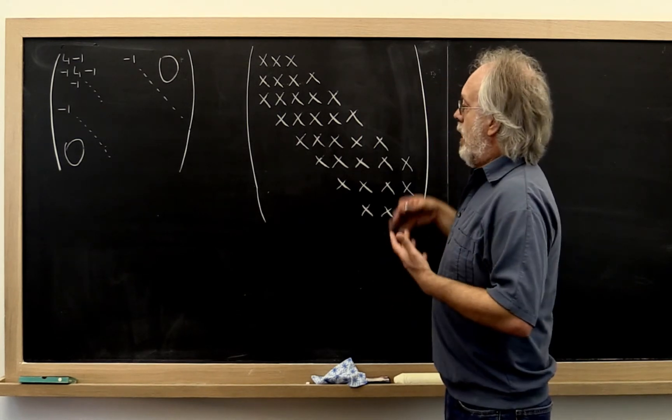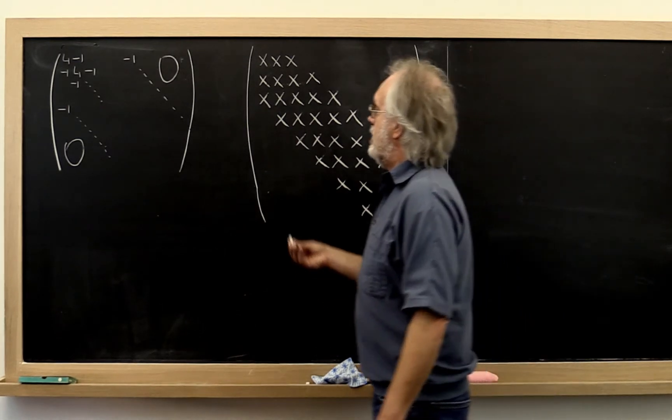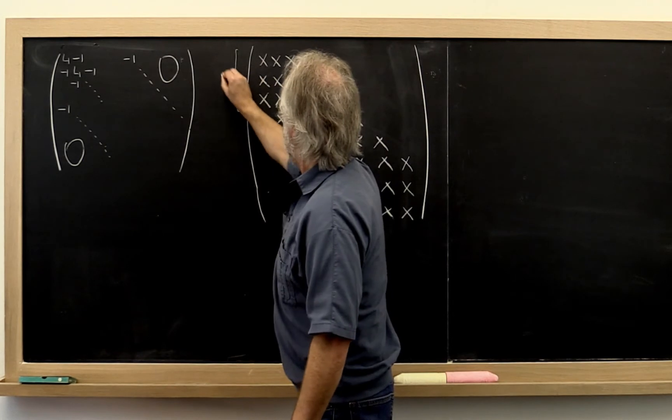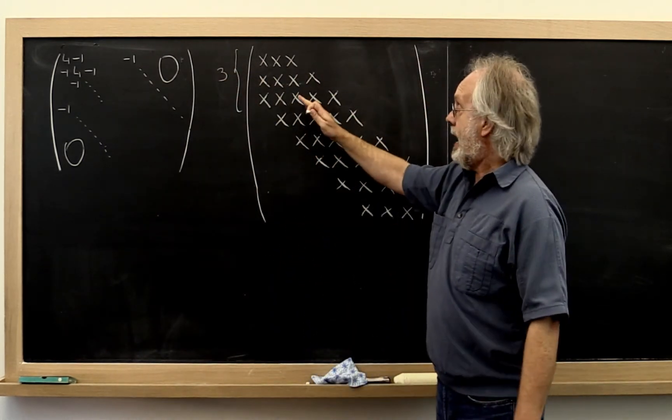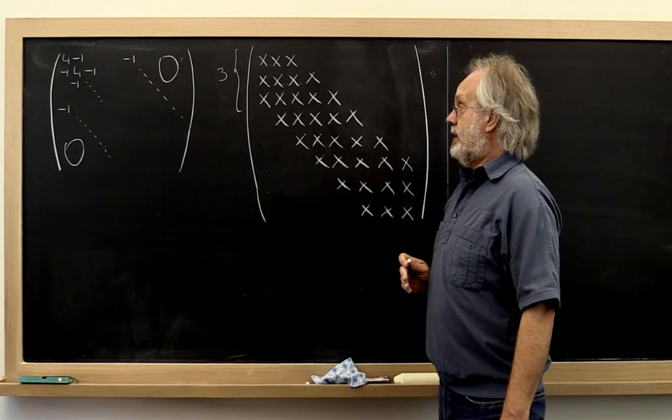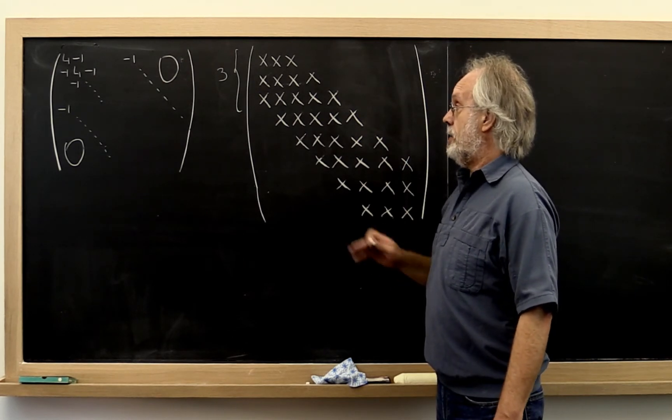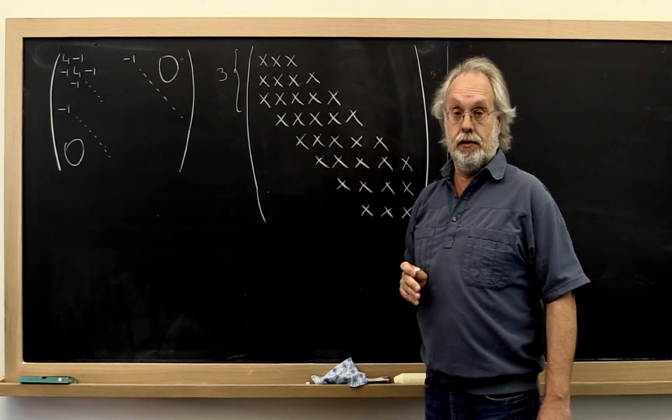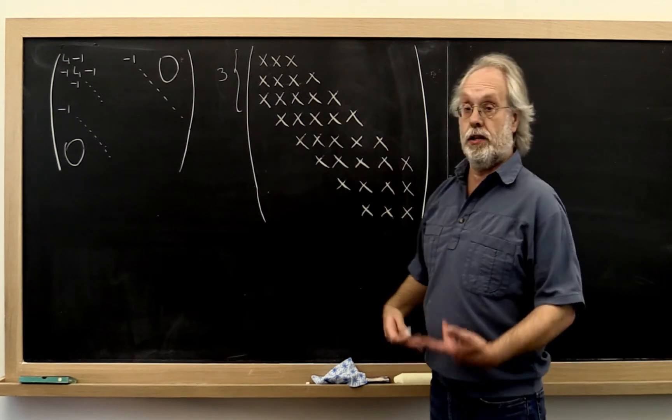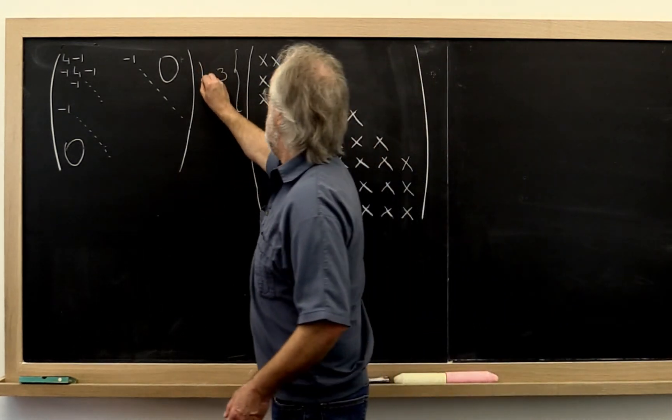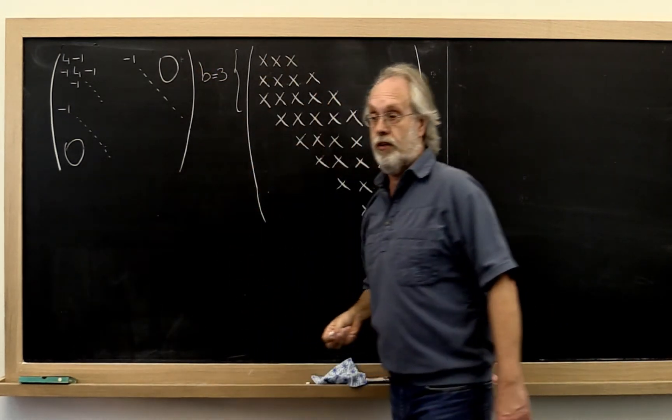And this particular matrix has a bandwidth of 3. So the number of diagonals and sub-diagonals that have non-zeros in them is the bandwidth. In general, the bandwidth would be given by b. So in this case b is equal to 3.